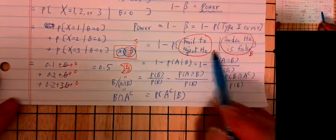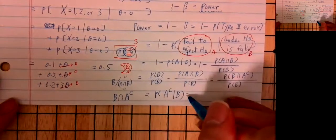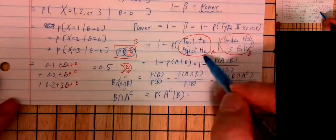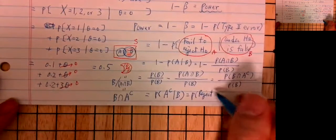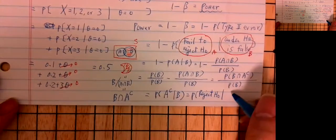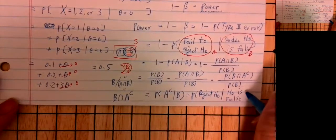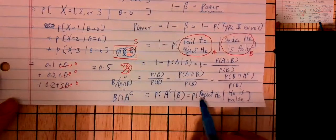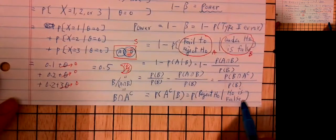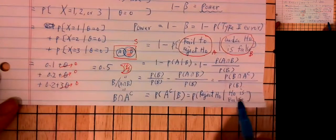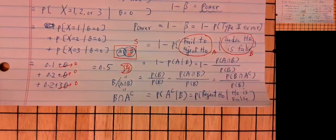So 1 minus P(A given B) equals P(A-complement given B). To reject H-naught becomes: reject H-naught when H-naught is false. When H-naught is false and you reject H-naught, if this probability is very high — very close to 1 — that means the test is more powerful. That's why we call this the power of the test.